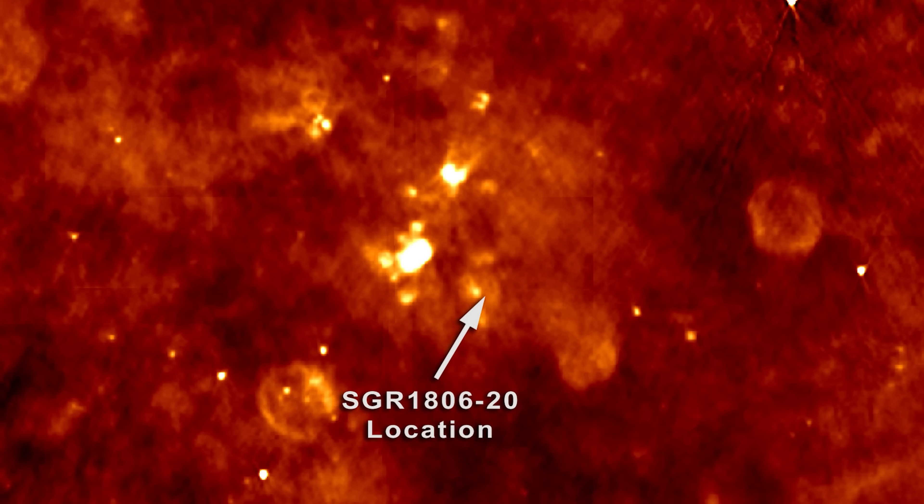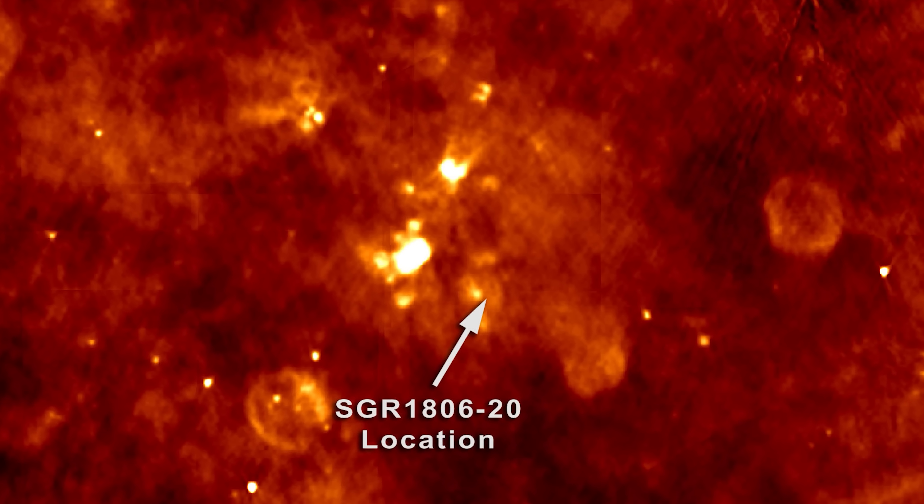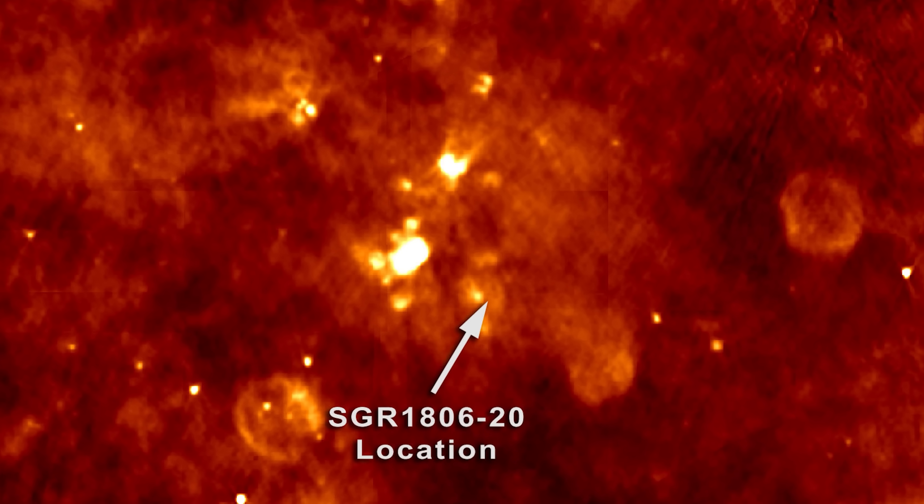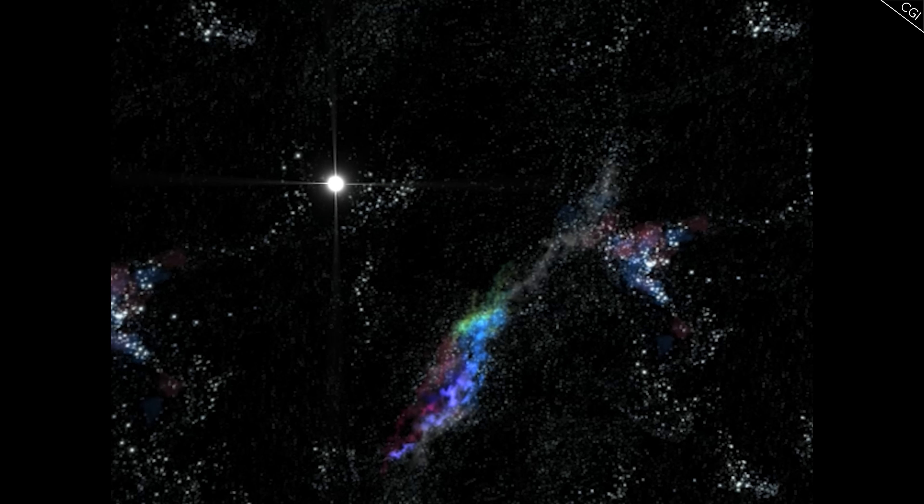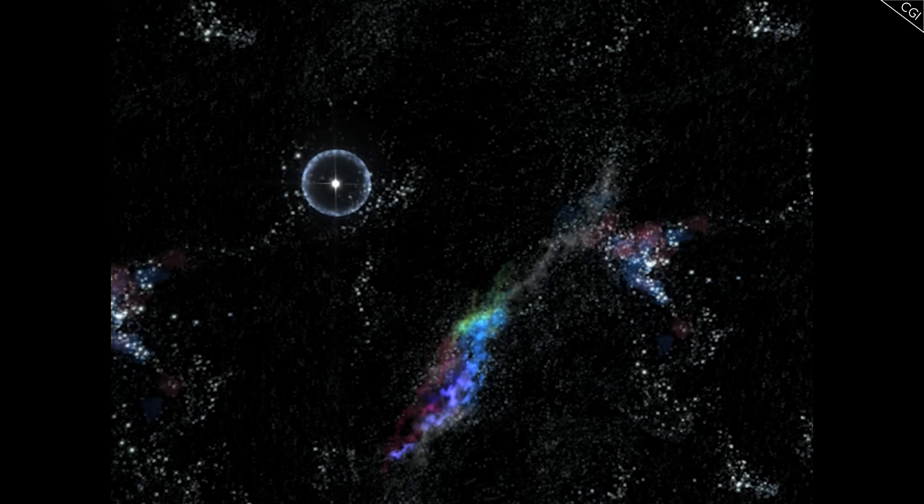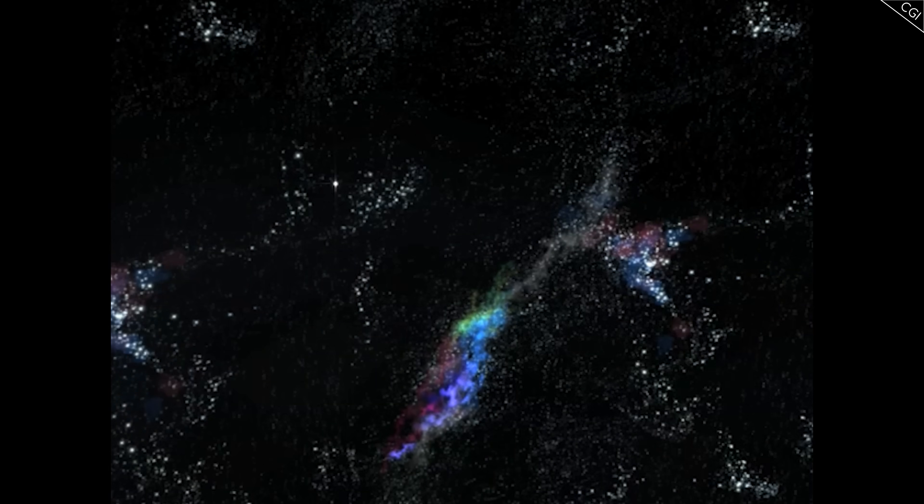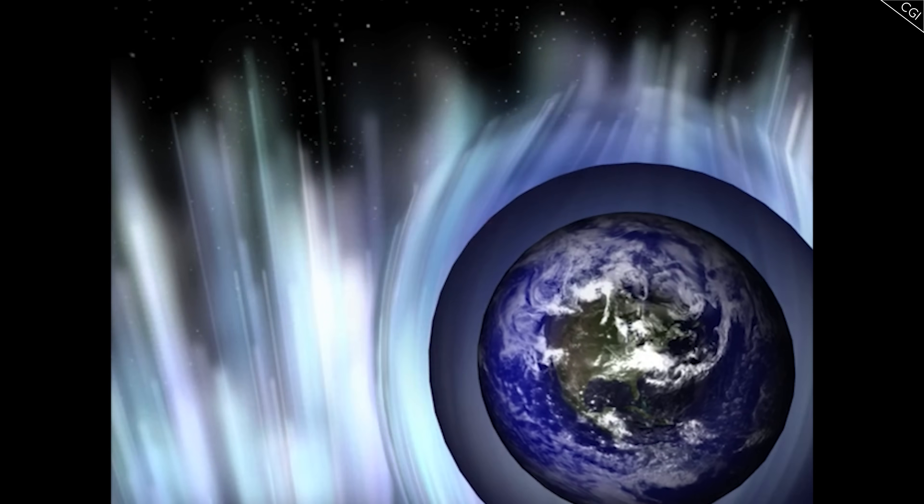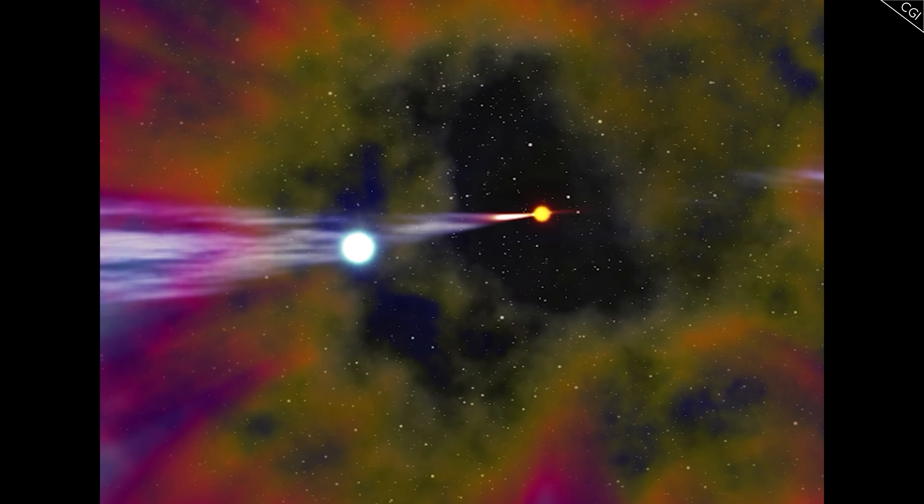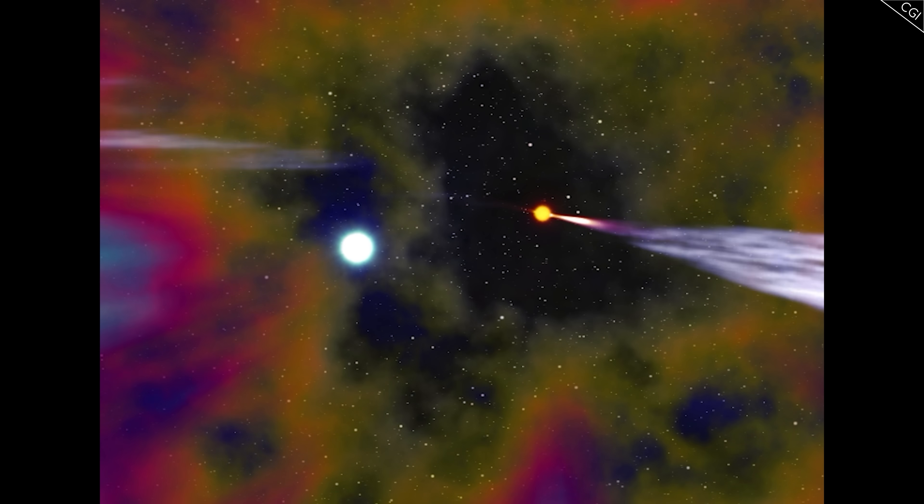The most powerful starquake detected, that of SGR 1806-20 in 2004, released so much energy that if it had taken place as far away as 10 light-years from Earth, it would have caused a mass extinction event. If something is able to light the beacon of a dead pulsar, it would be this.